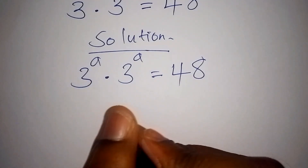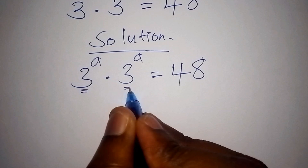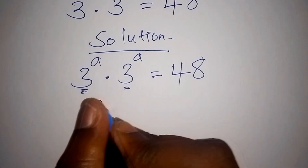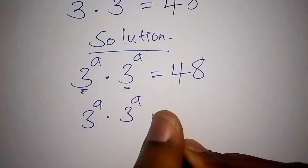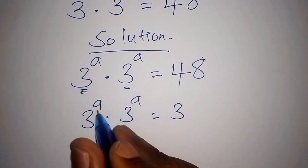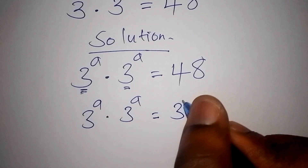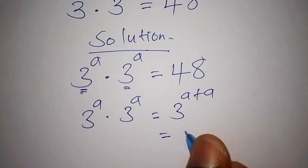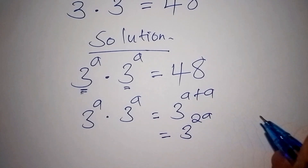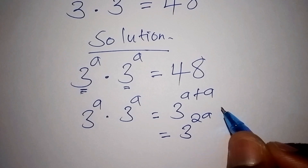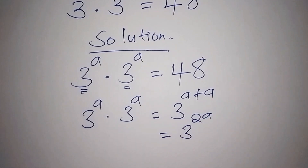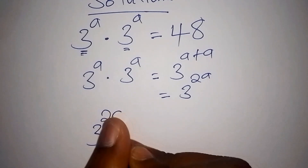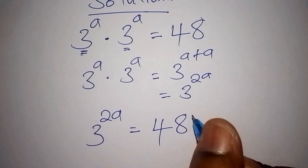We have 3 to the power of a multiplied by 3 to the power of a. Since these have the same base, we can combine the exponents. The multiplication causes the exponents to add, so we get 3 to the power of a plus a, which is 3 to the power of 2a. This means 3 to the power of 2a is equal to 48.